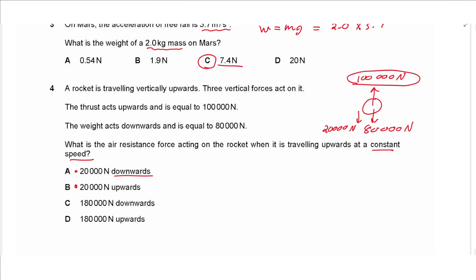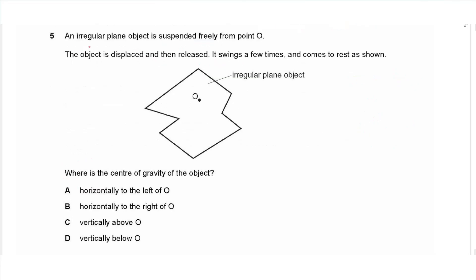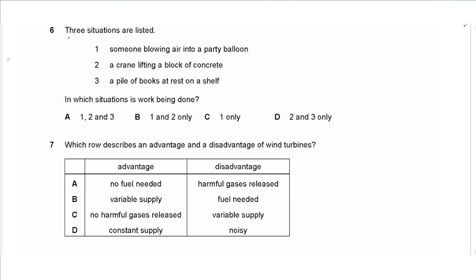Question five says an irregular plane object is suspended freely from point O. The object is displaced and then released. It swings a few times and comes to rest as shown. Where is the center of gravity of the object? So if the object is hanging and at rest it is in equilibrium, so the center of mass and the weight will be directly below the pivot. So it is not horizontal, it is vertically below O, so choose D.